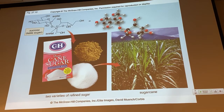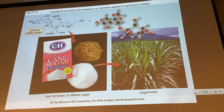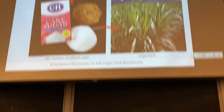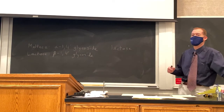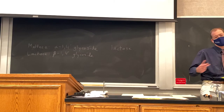Is sucrose a reducing sugar? No, it is not — there is no hemiacetal, so it's not a reducing sugar; we have two acetals. Will sucrose undergo mutarotation? No — no hemiacetal, no mutarotation. You can cleave sucrose with strong acid in water or with enzymes to give fructose and glucose. The key things with disaccharides are identifying the sugars involved, the type of glycosidic linkage (alpha or beta, with the correct carbon numbers), and whether the disaccharide is a reducing sugar.